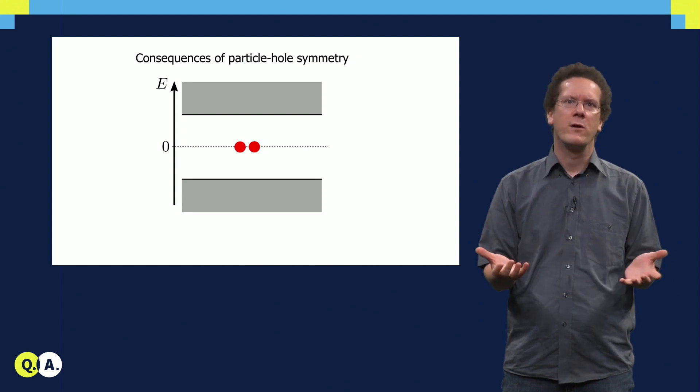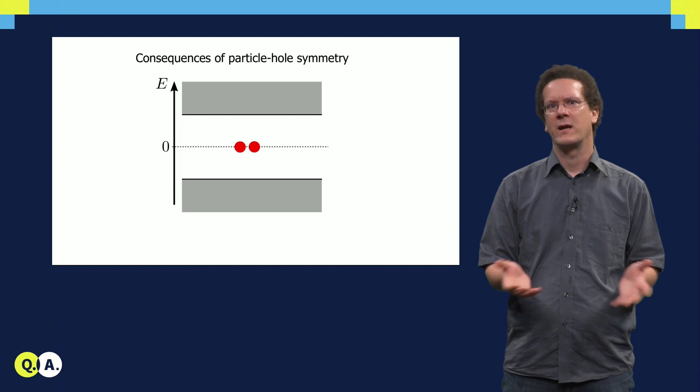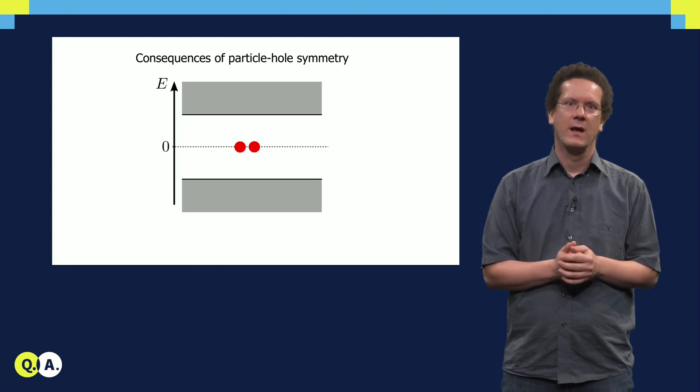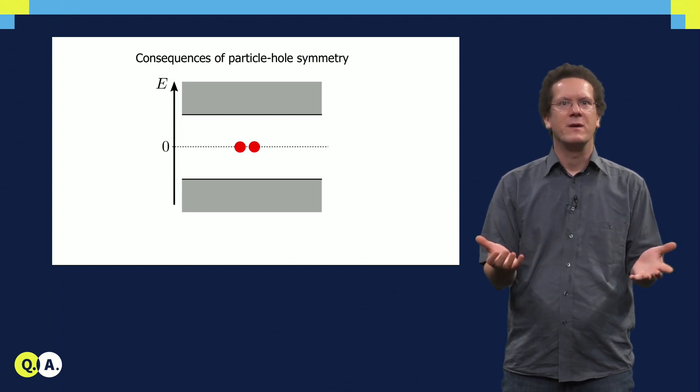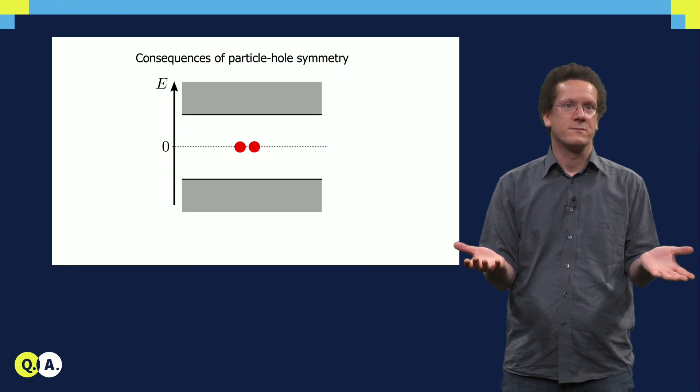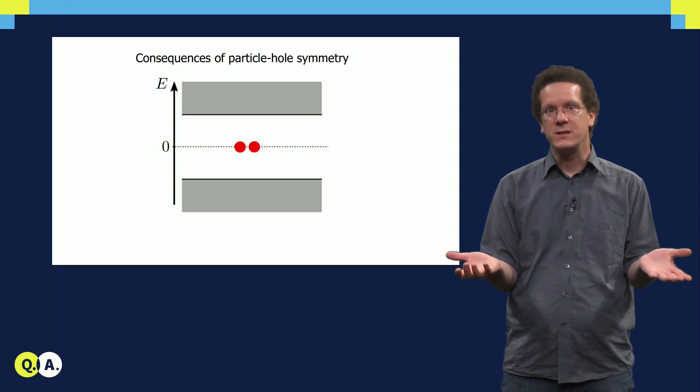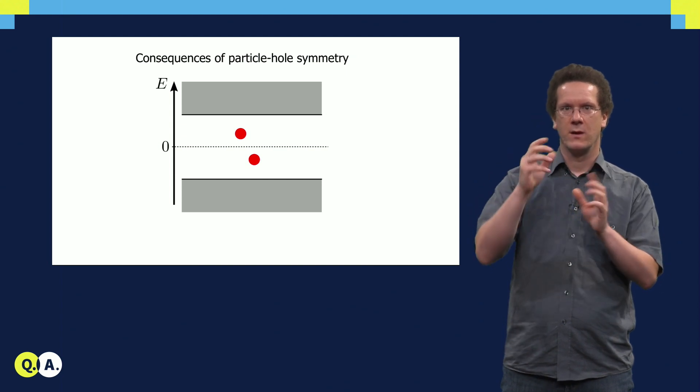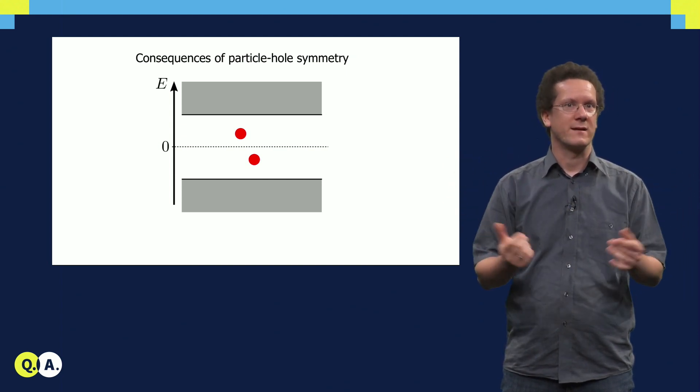Now, I told you before, in real condensed matter systems, Majorana bound states always come in pairs. Any normal fermionic state can be described with two Majorana states. In this case, a perturbation can actually move them symmetrically in the spectrum. So that of course is not protected.